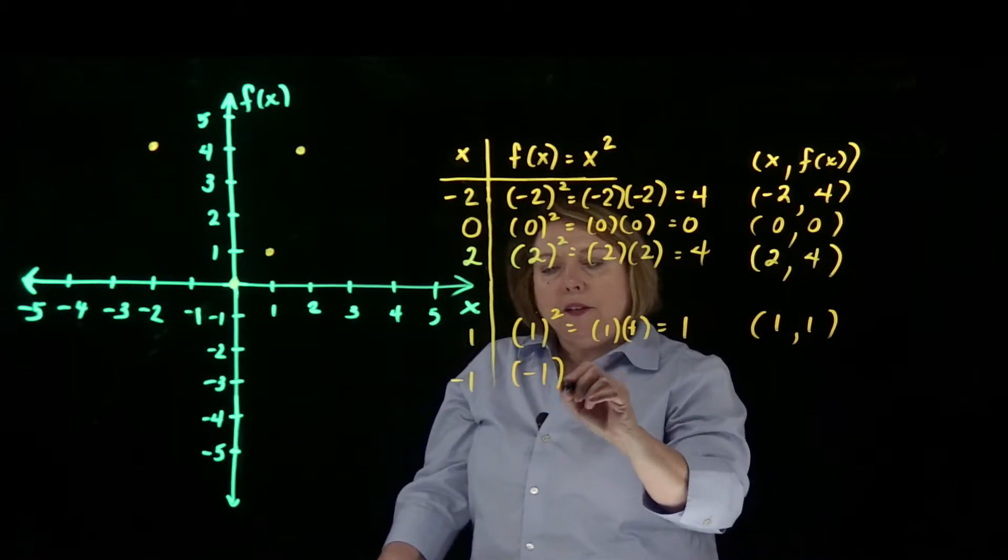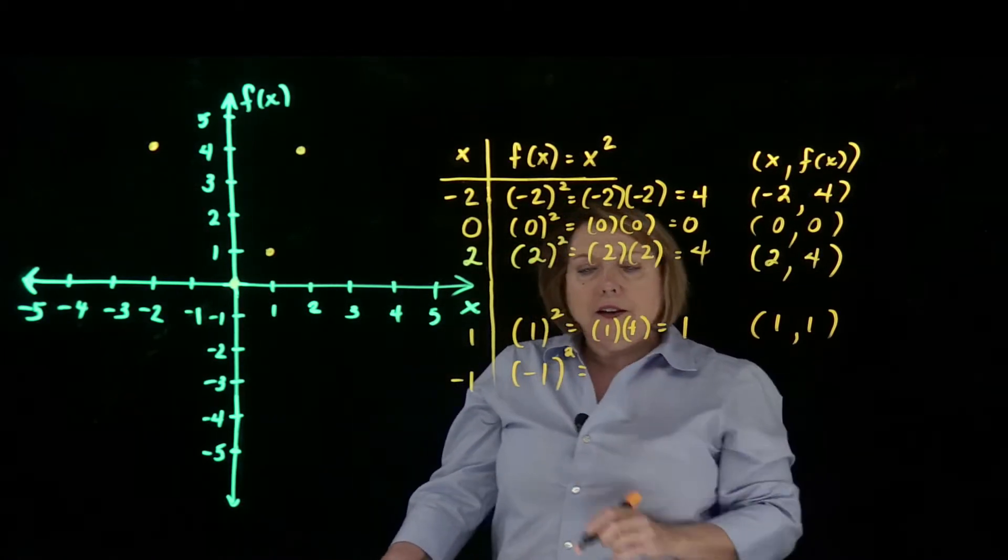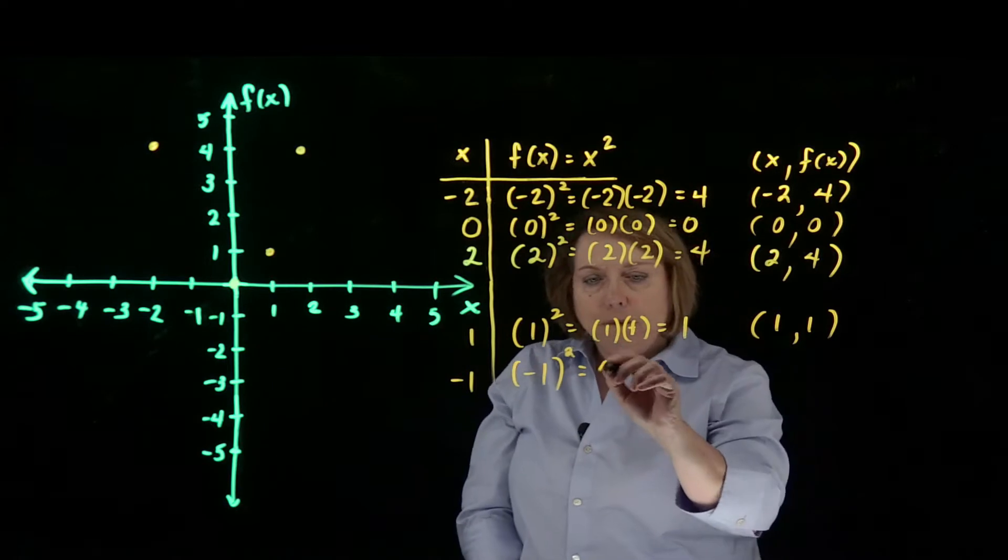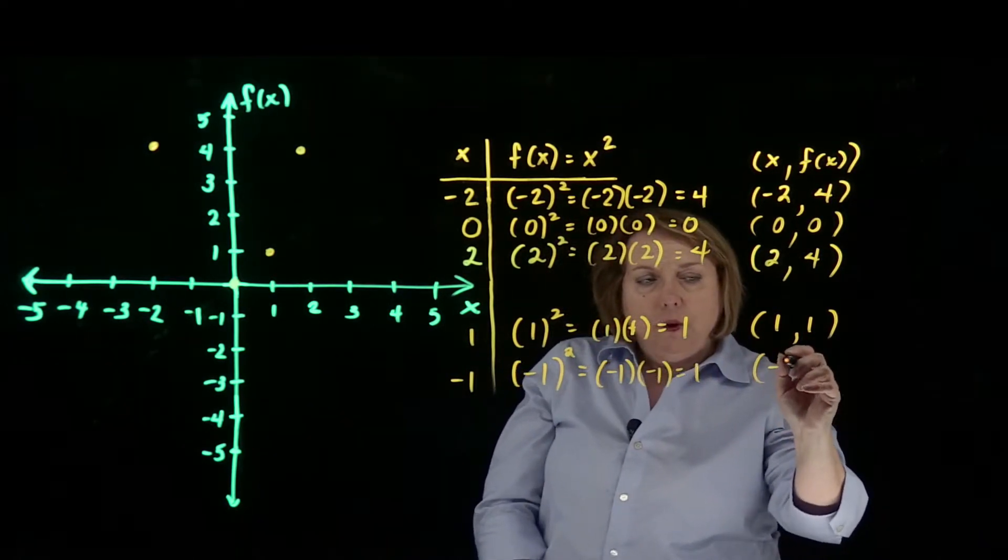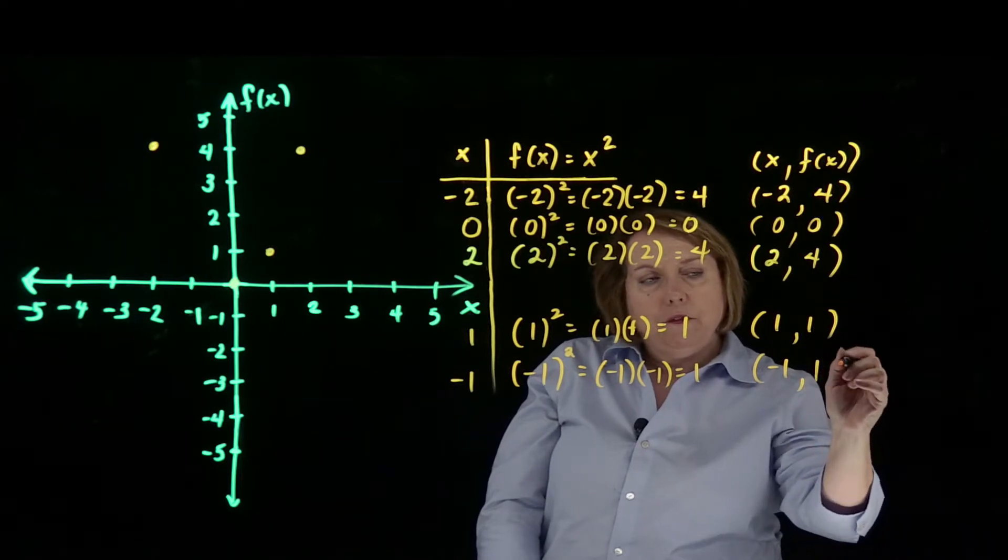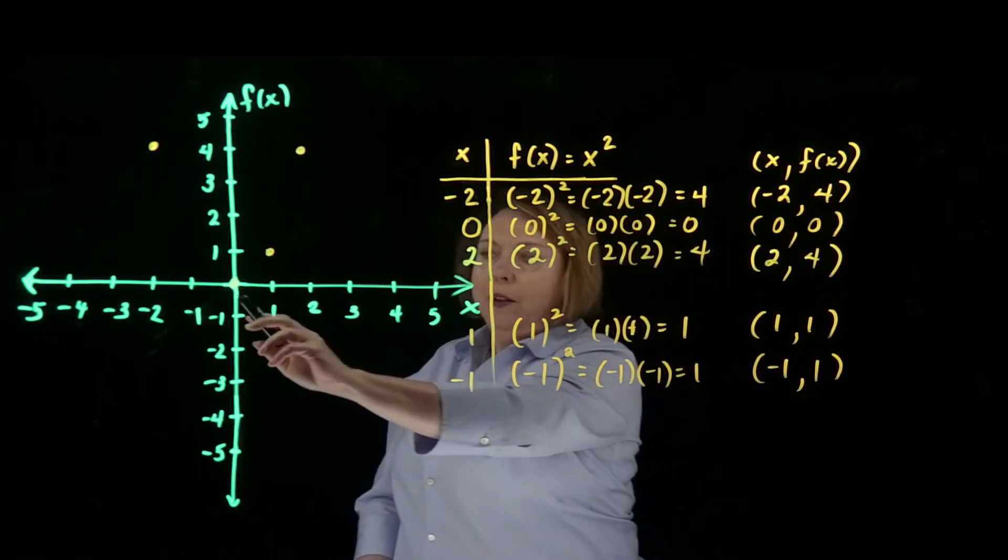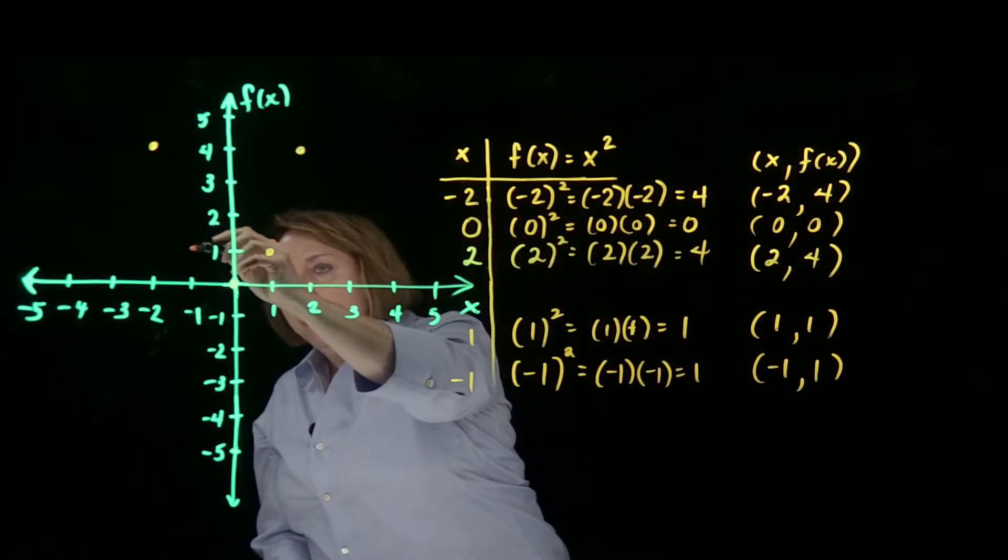And then the same thing, it'll be the same value of f of x if x is negative 1. Negative 1 times negative 1 is a positive 1. So we have x is negative 1, f of x is positive 1. Negative 1, positive 1.